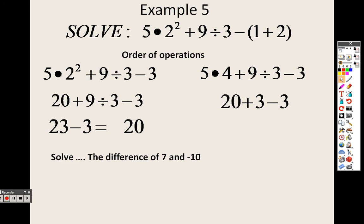What is the difference of 7 and negative 10? The difference means subtraction. So we are going to have to subtract. The difference means you keep them in the same order. So it's 7 minus negative 10. So 7 minus negative 10 is the same as 7 plus 10, which is 17.